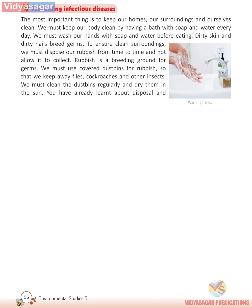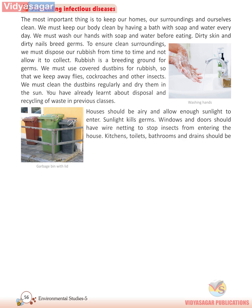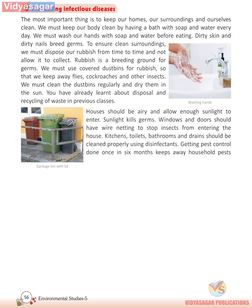You have already learned about disposal and recycling of waste in previous classes. Houses should be airy and allow enough sunlight to enter — sunlight kills germs. Windows and doors should have wire netting to stop insects from entering. Kitchens, toilets, bathrooms, and drains should be cleaned properly using disinfectants. Getting pest control done once in six months keeps away household pests that cause disease.